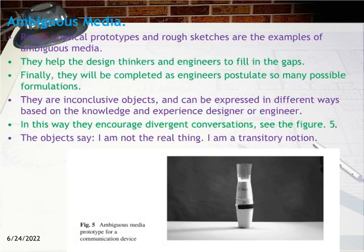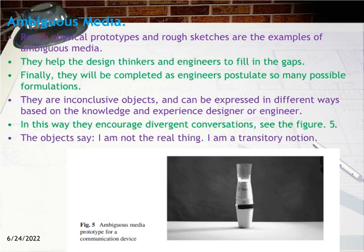Ambiguous media: Rough physical prototypes and rough sketches are examples of ambiguous media. They help design thinkers and engineers fill in the gaps and will be completed as engineers postulate many possible formulations. They are inconclusive objects that can be expressed in different ways based on the knowledge and experience of the designer or engineer, encouraging divergent conversations. As shown in Figure 5, the objects say: 'I am not the real thing. I am a transitory notion.'